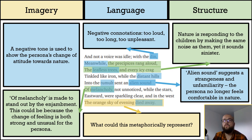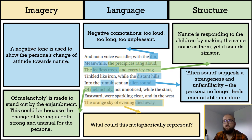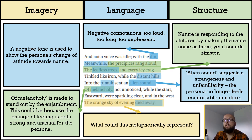Much like how enjambment was used to highlight a phrase at the start of the poem, Wordsworth has done it again towards the end, with the phrase 'of melancholy' standing out. Melancholy is a feeling of deep, thoughtful sadness, made to stand out to reflect how this new feeling really does stand out to the poem's persona — both strong and unusual. This sense of melancholy is also added to by the use of caesura in the final three lines, which break up and slow down the poem's rhythm, making it seem more pensive.